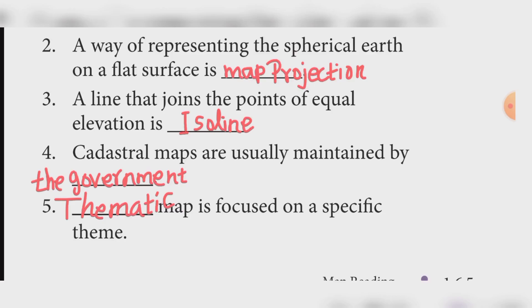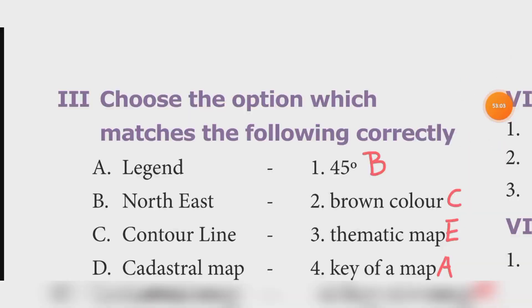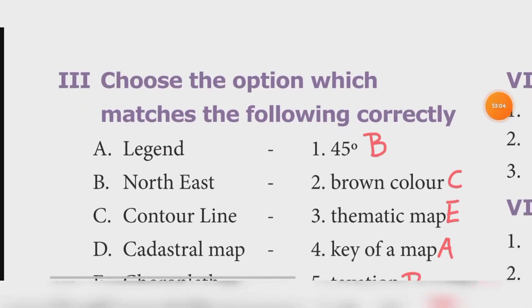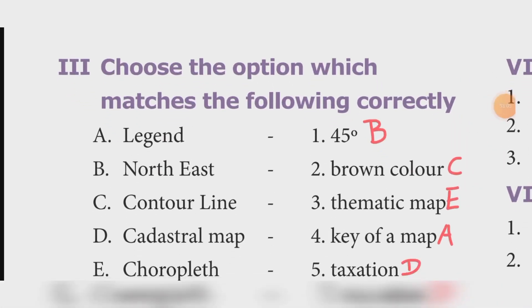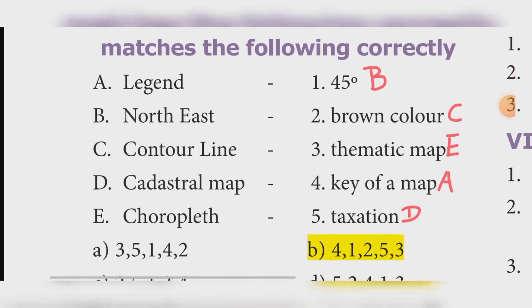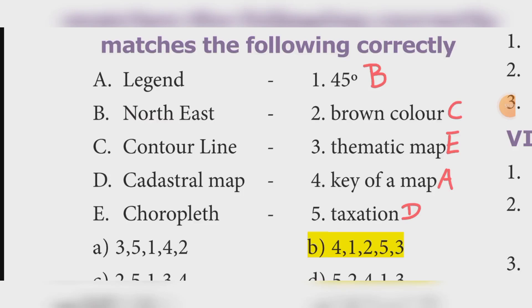Match the following correctly. Legend — Key of the map. Northeast — 45 degrees. Contour line — Brown color. Cadastral map — Taxation. Choropleth — Thematic map. Answer: Option B — 4, 1, 2, 5, 3.